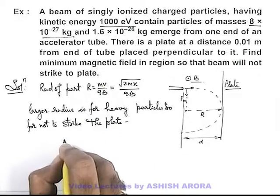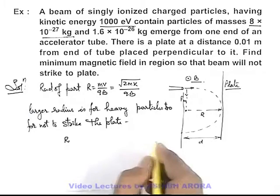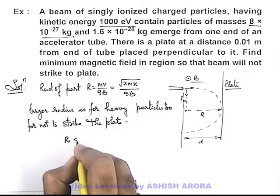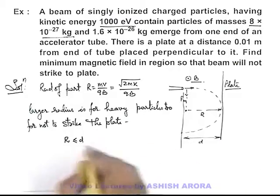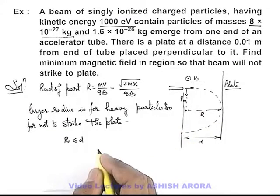In this situation radius of circular path must be less than or equal to the separation d because even at equality these particles will just graze will not exactly hit the plate.